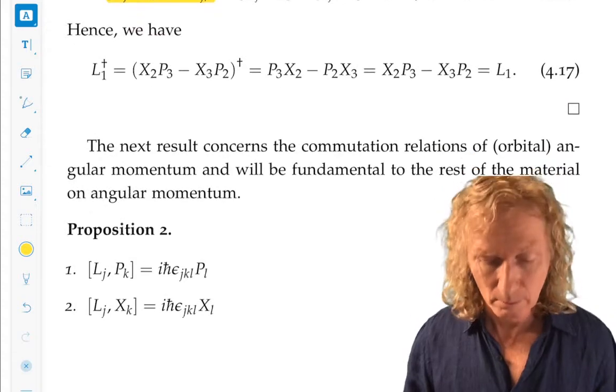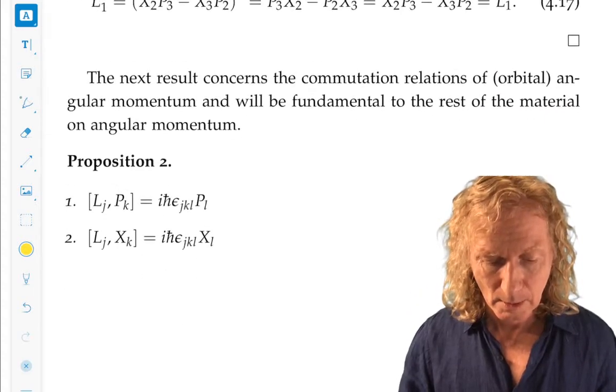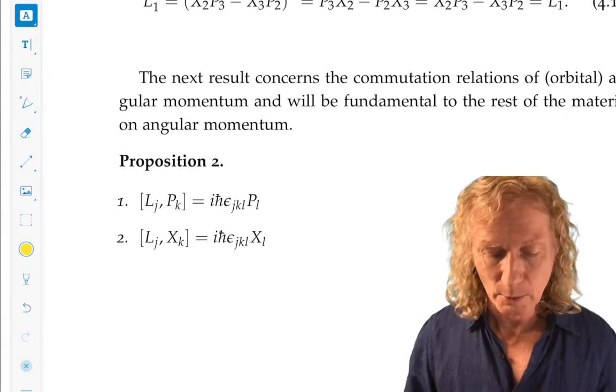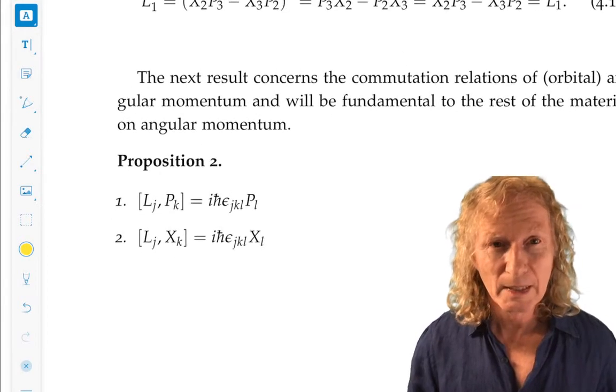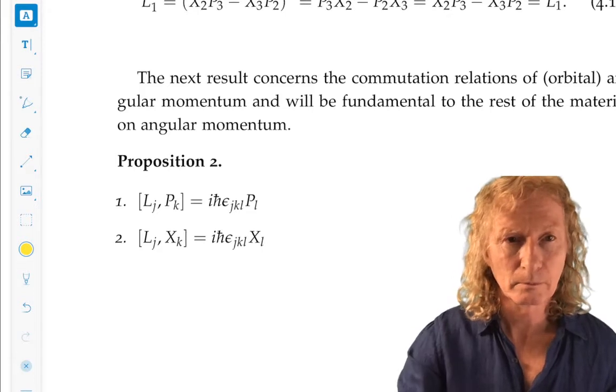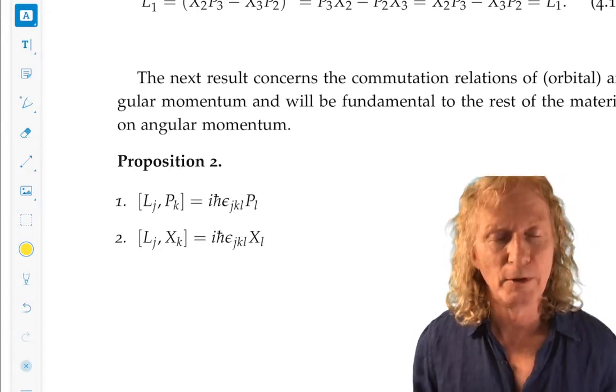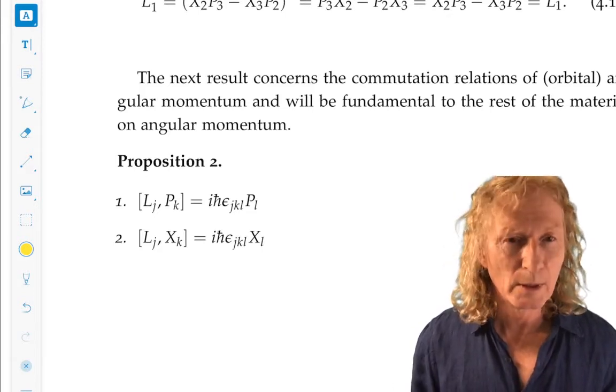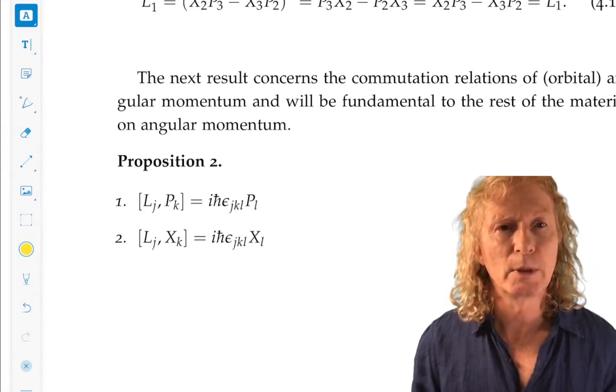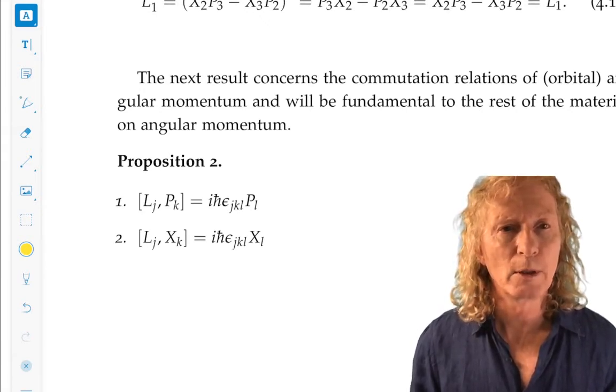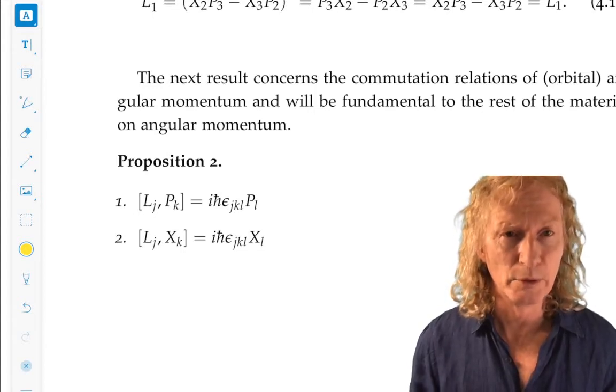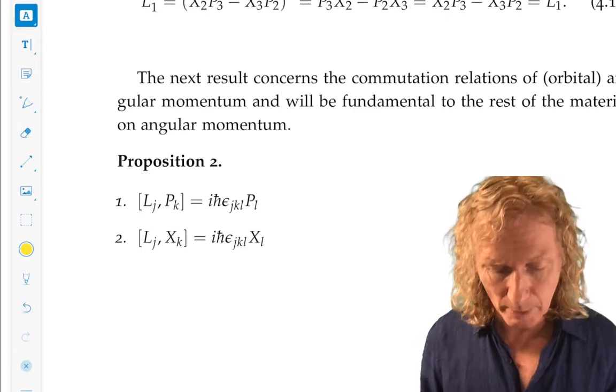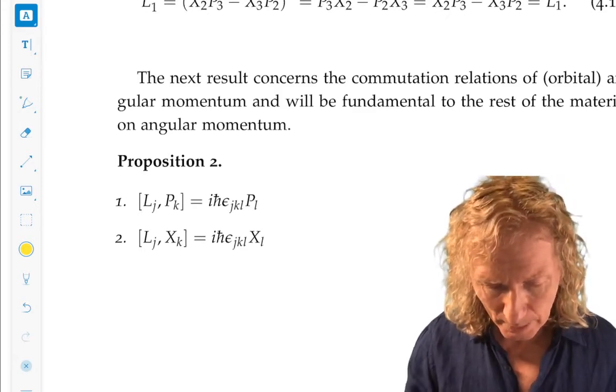So again, you need to understand those arguments. But then, the next proposition is really important. These are commutation relations for the components of orbital angular momentum with the components of momentum, position, and orbital angular momentum. So look at the pattern we have here.